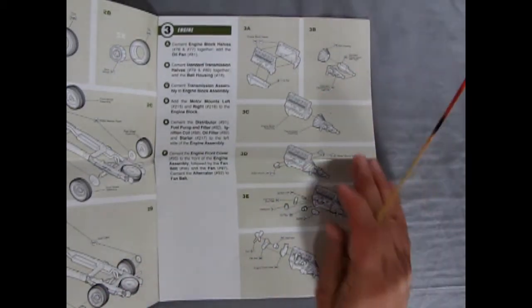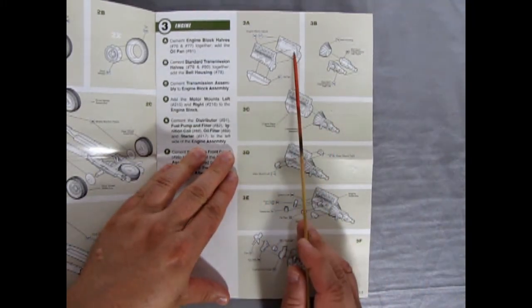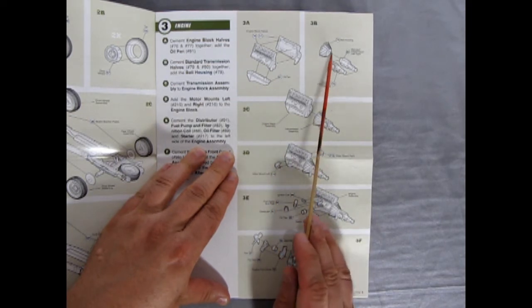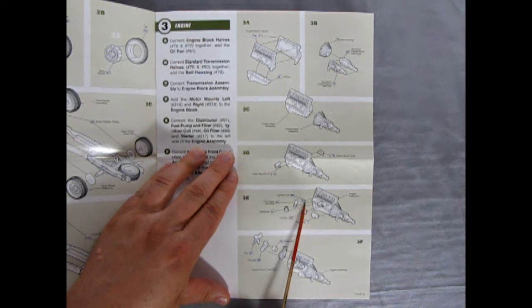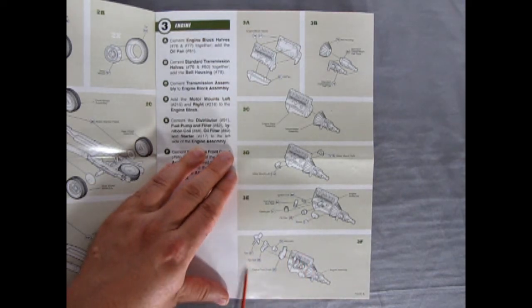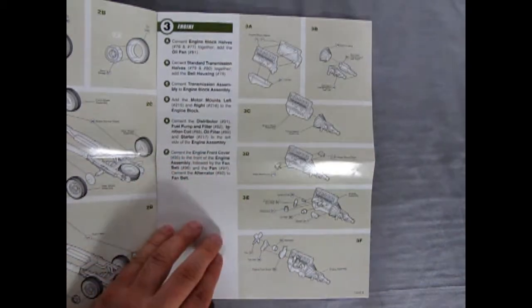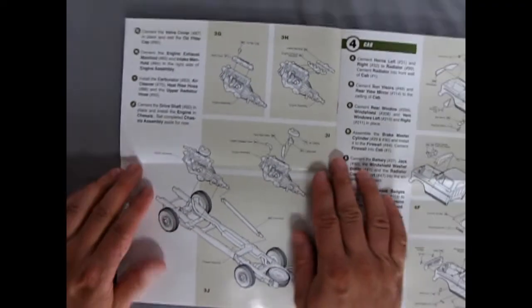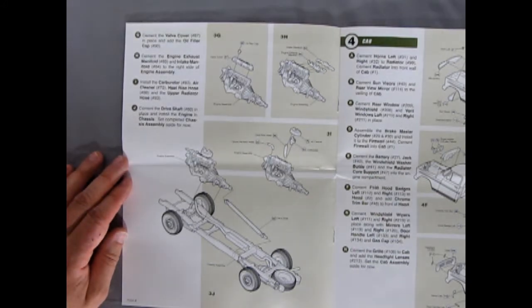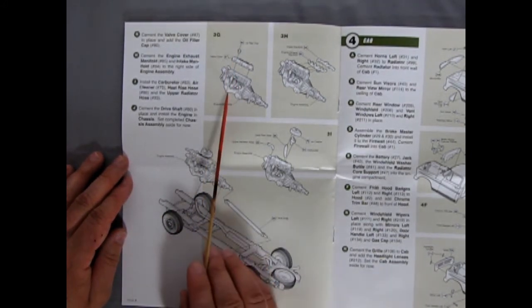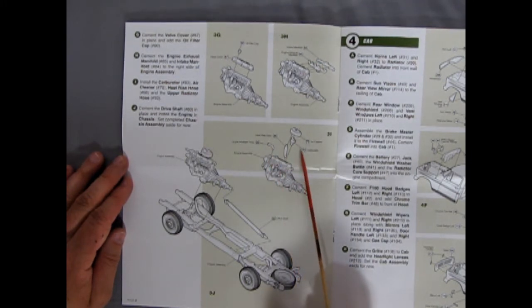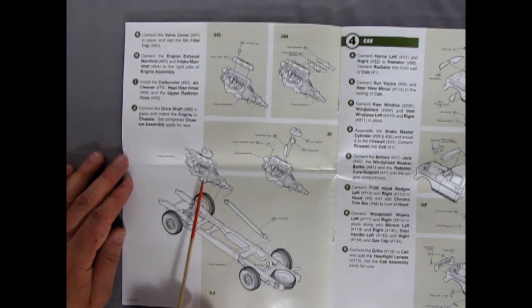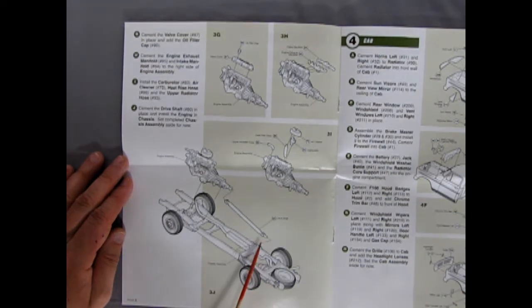Then we get over here into our next section, which is our engine. This is a multi-piece engine, very cool, much like the 69 Ford head. You've got right and left hand engine blocks and the oil pan going underneath. Then the nice bell housing and the right and left standard transmission. All goes together here. Motor mount left and right. And then we get our ignition coil, fuel pump and filter. The distributor, the oil filter, the starter motor. And finally our fan, fan belt, alternator and front engine cover.